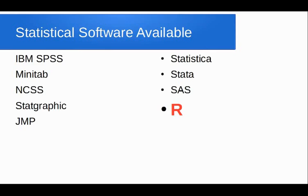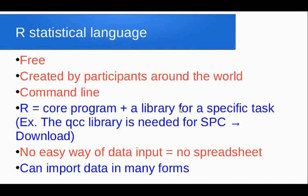In the market, we have lots of options that you can use — SPSS, Minitab, NCSS, StatGraphic, JMP, Statistica, Stata, SAS. All these programs you have to pay for. In the case of R, R is free. It's created by people around the world, not just one company — it's a free software that people help each other to create. It's not like SPSS or Minitab or commercial software.